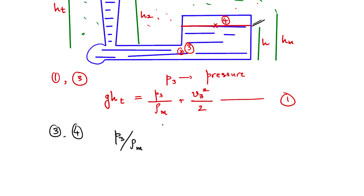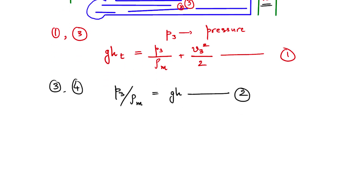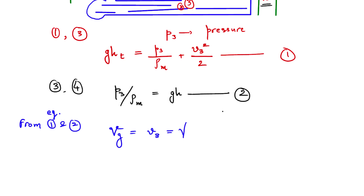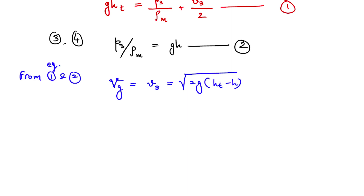From this we obtain P3 divided by rho of the metal equals G times H — where H is the height we discussed. This is equation two. Taking equations one and two and equating them, we get V_G which equals V3: root of 2·G·(H_T minus H). So the effective head height is H_T minus H, which is your effective head — the liquid column height.